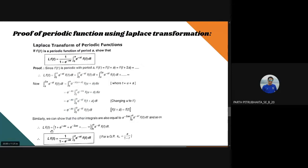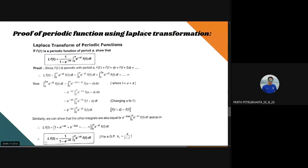Therefore, L{f(t)} = (1 + e raised to minus as + e raised to minus 2as + ... up to infinity) times the integral from 0 to a of e raised to minus st times f(t) dt. This is a geometric progression. The sum of a geometric progression to infinity is a upon (1 minus r), where here a = 1 and r = e raised to minus as. So we get L{f(t)} = 1 upon (1 minus e raised to minus as) times the integral from 0 to a of e raised to minus st times f(t) dt. Hence, the Laplace Transformation of a periodic function is proved.